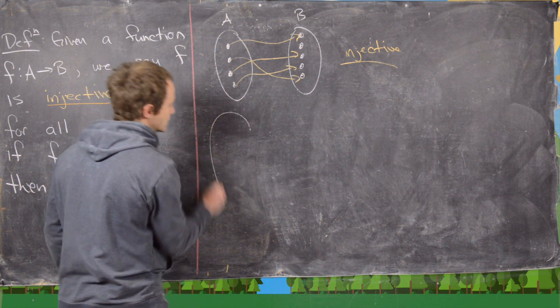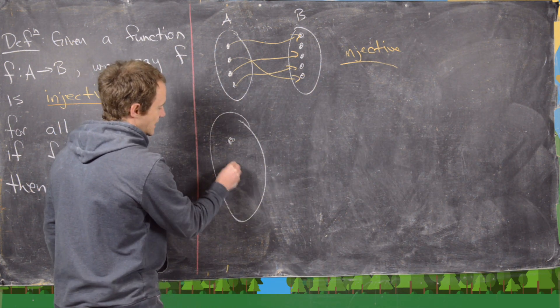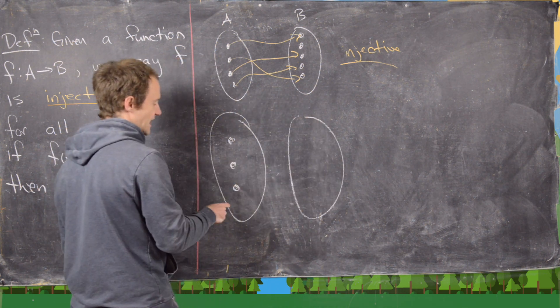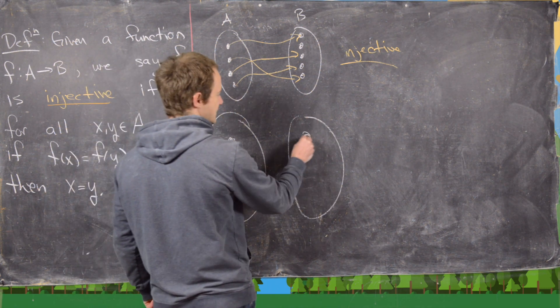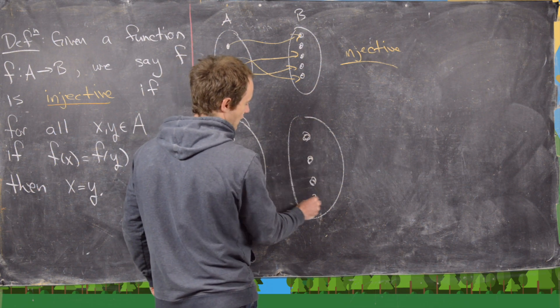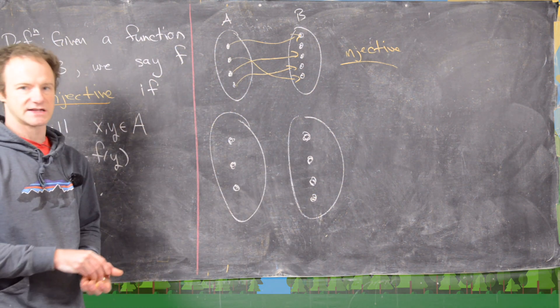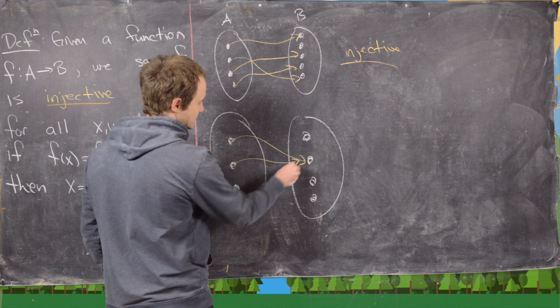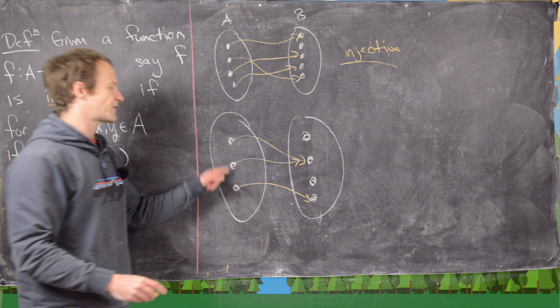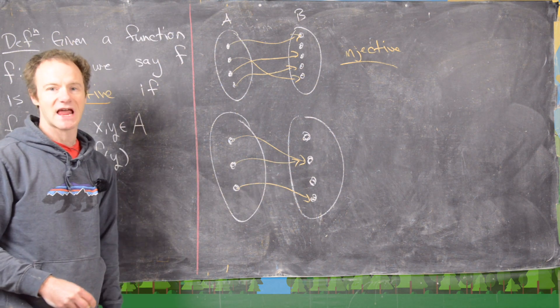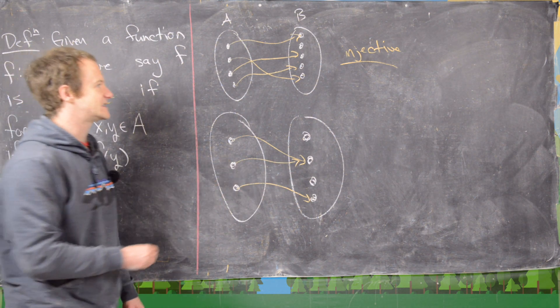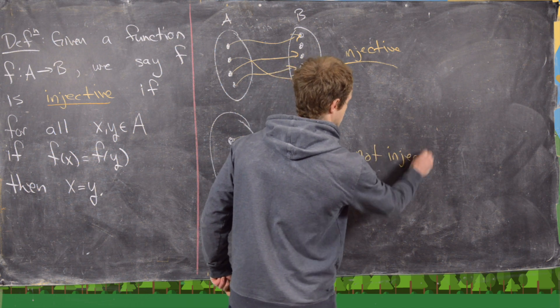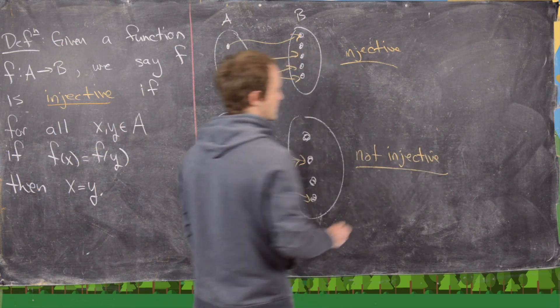But now, suppose otherwise that we have this set over here A which has these three dots, and this set over here B which has four dots, and then maybe our function goes as follows. So these first two dots are mapped to the same element, so that makes this not injective.